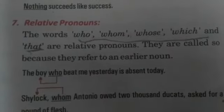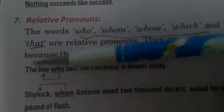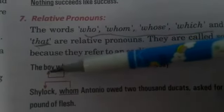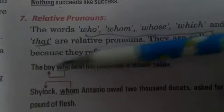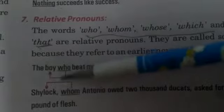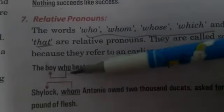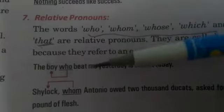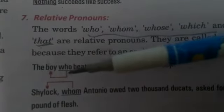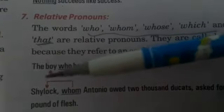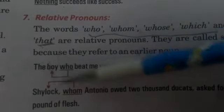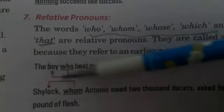For example: 'The boy who beat me yesterday is absent today.' The word 'who' is used after the subject noun — it refers back to 'the boy.' In interrogative pronouns the w-h words were used to ask questions, but in relative pronouns they refer back to a subject noun.